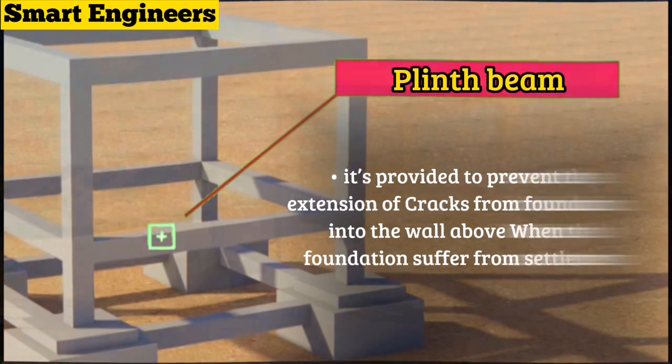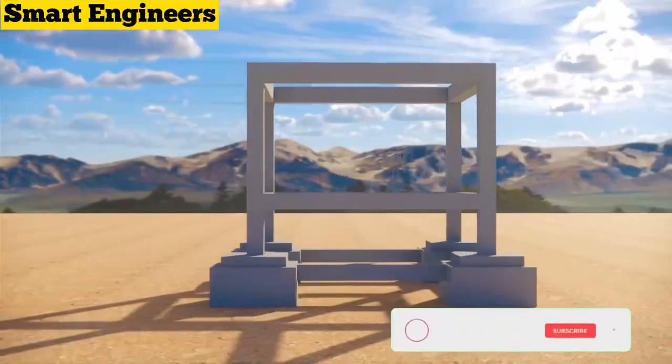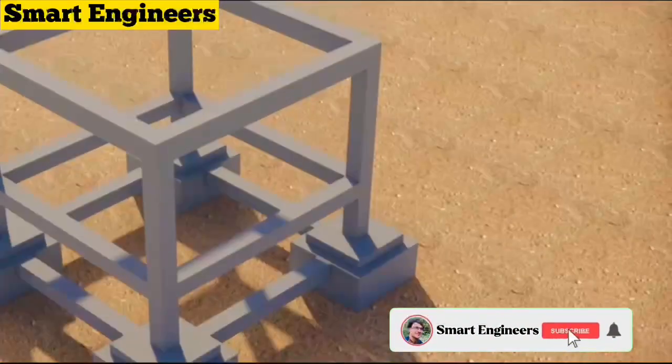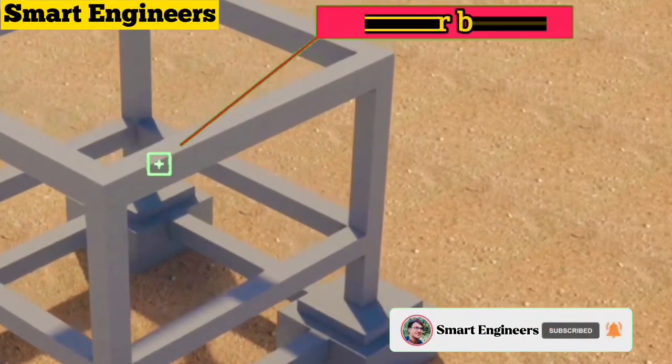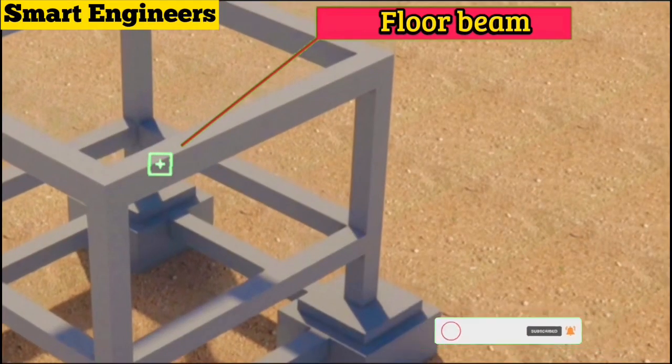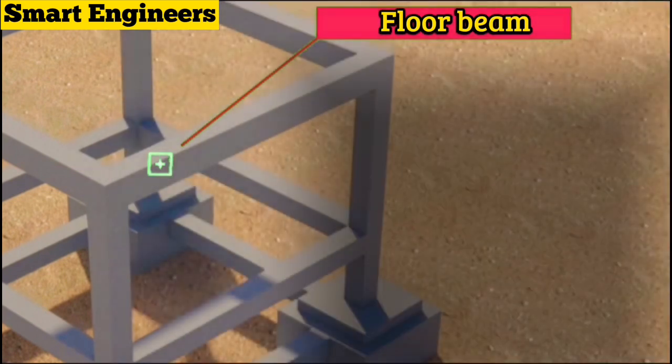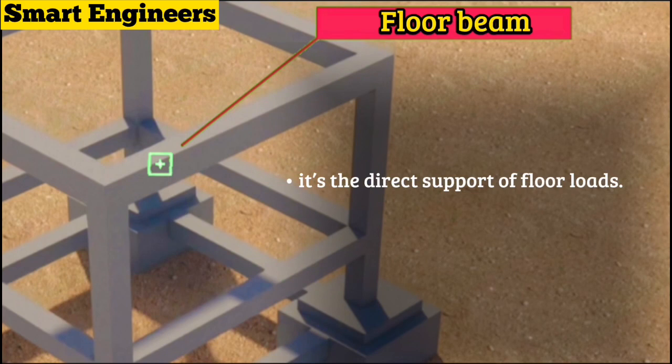After that, at the top you can see this is called floor beam. What is the function and why is it provided in construction work? Floor beam is a beam which is the direct support of the floor load and transfers this load to the adjacent columns.